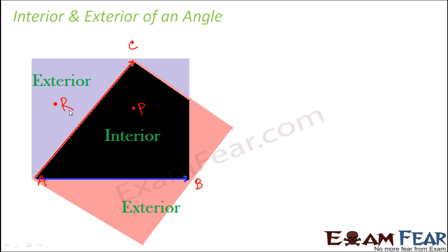Similarly, if we have a point R somewhere here, we would say that R is exterior to this angle. If you have any point anywhere other than this black region, they are going to be exterior. Only this black region is the interior of the angle.